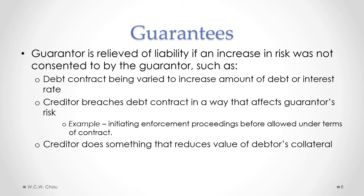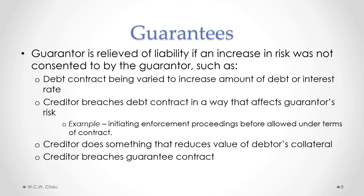Another situation is where the creditor does something that reduces the value of the debtor's collateral. For example, if the collateral was something perishable like pork bellies and the creditor took over possession of that collateral but did not put them into a refrigerator and they all went bad, then the guarantor can say, you didn't take care of the collateral, so I shouldn't be held liable for the loss in value. Also, if the creditor breaches some term in the contract of guarantee itself, the guarantor can use that as the basis for being relieved of liability.